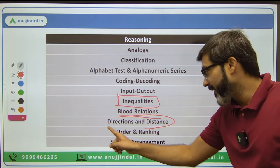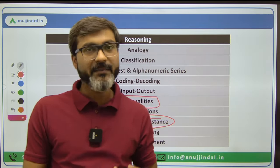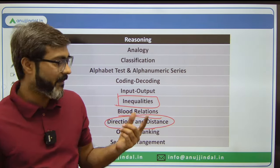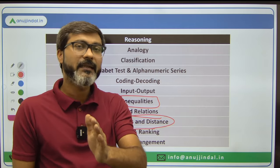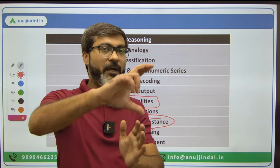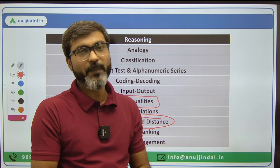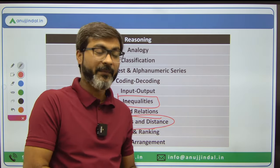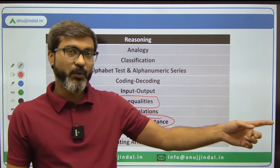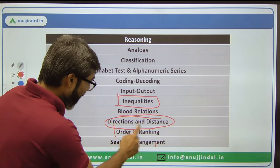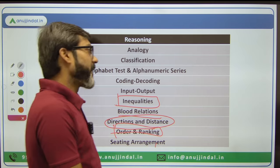Inequalities — questions from this topic always appear and nothing can stop the examiners of RBI Grade B from asking them. Blood Relation is also one of the important topics. Direction and Distance — sometimes 1 question, sometimes 2 to 3 questions based on a certain set of information. Order and Ranking is important. Seating Arrangement is also a key topic.